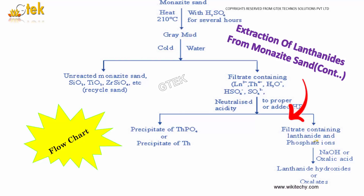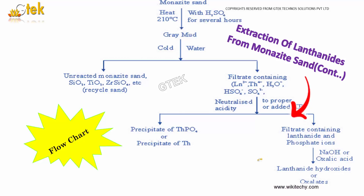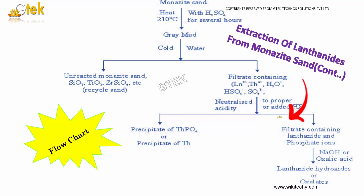The filtrate containing the lanthanide and phosphate ions is mixed with sodium hydroxide or oxalic acid to obtain the lanthanide oxalates or lanthanide hydroxides. This is the overall step of extraction of lanthanides from monazite sand.